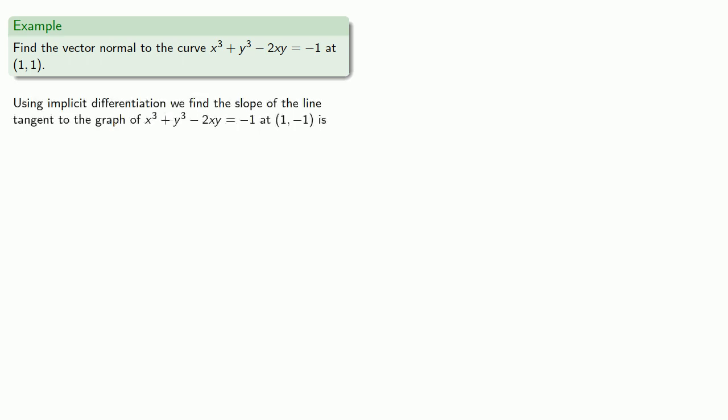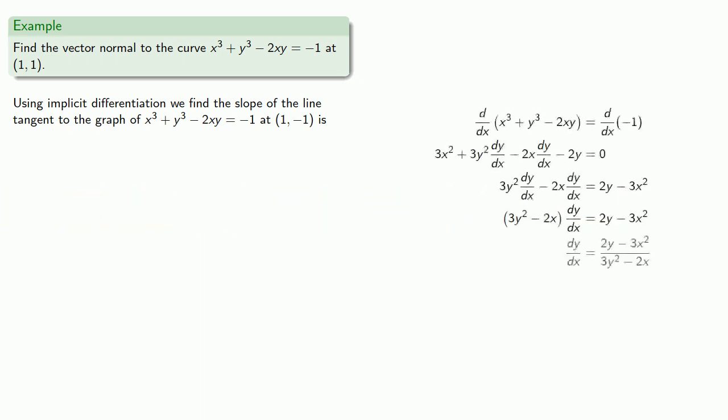And so using implicit differentiation, we find the slope of the line tangent to the graph, which will be negative one.